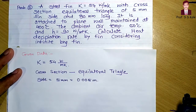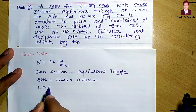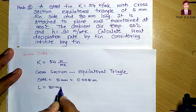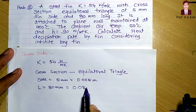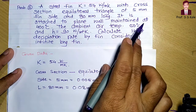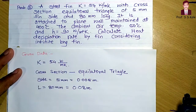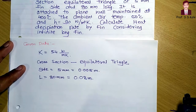The side of the equilateral triangle is 0.005 meter. The fin is 80 mm long, and converting 80 mm to meters gives 0.08 meter. So the length is 0.08 meter. The fin is attached to a plane wall maintained at 400 degrees Celsius.